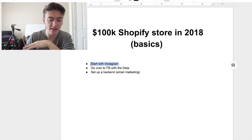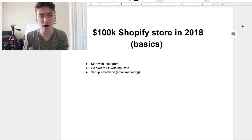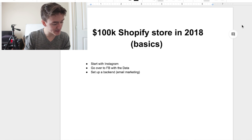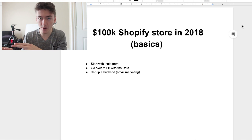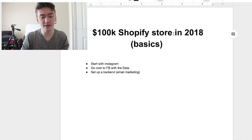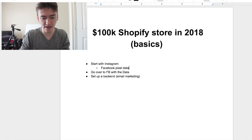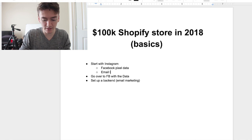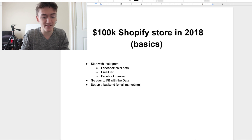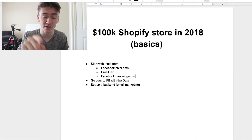Start with Instagram, which basically means start with an easy form of audience growth — which can be anything from Instagram influencers, to finding a Facebook page that already has a following in the niche you're interested in, and then gathering Facebook pixel data, building an email list, or building a Facebook messenger list, which is something a lot of people aren't doing right now.